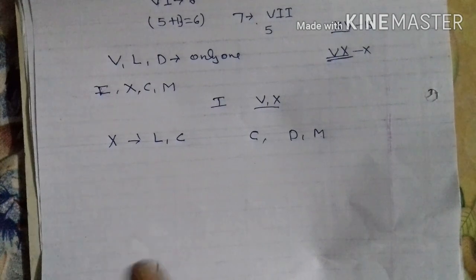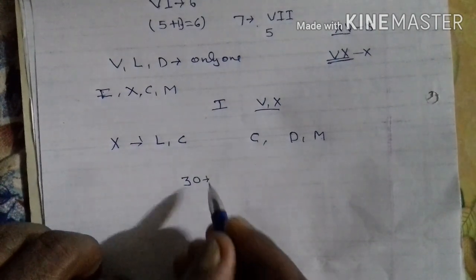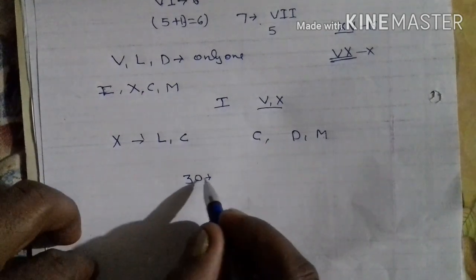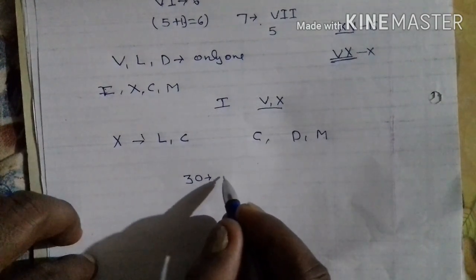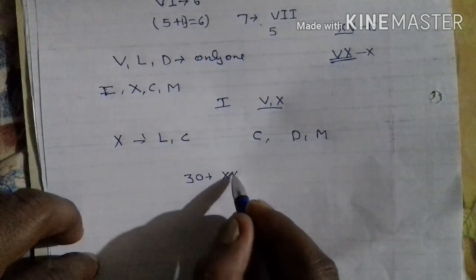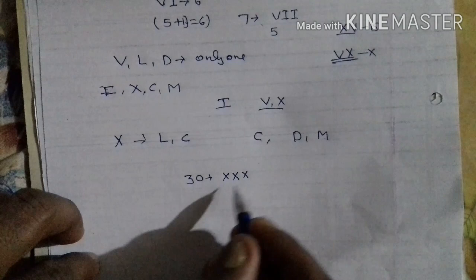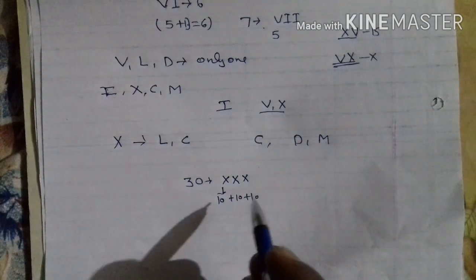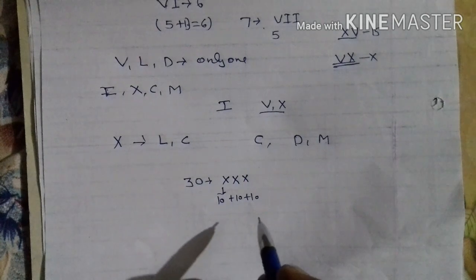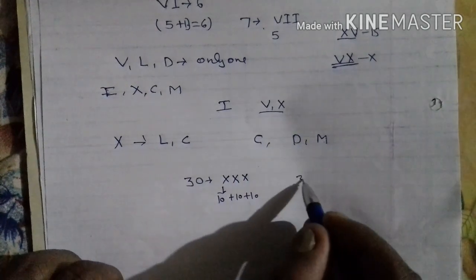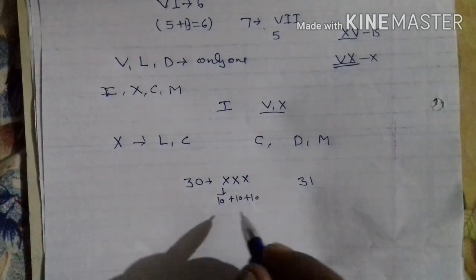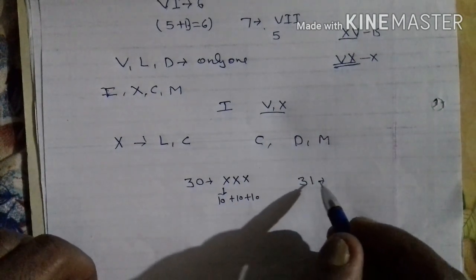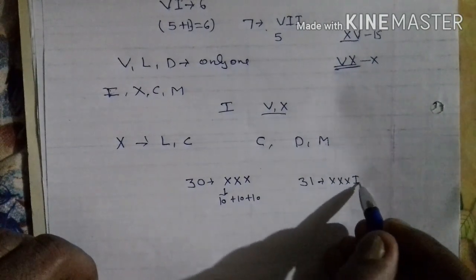Suppose we want to write 30. 30 means 10 plus 10 plus 10, so we write X plus X plus X. Suppose we want to write 31: this is 30 and we add 1. So 31 is written as X, X, X, I.